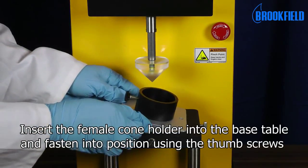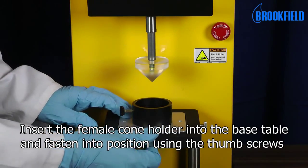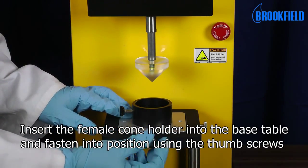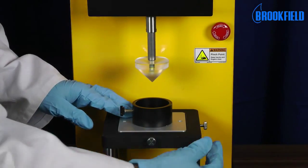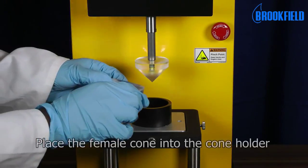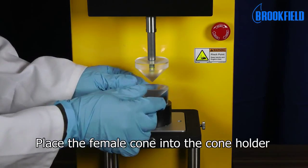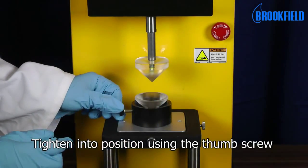Insert the female cone holder into the base table and fasten into position using the thumbscrews. Place the female cone into the cone holder and tighten into position using the thumbscrew.